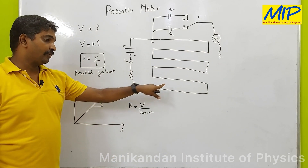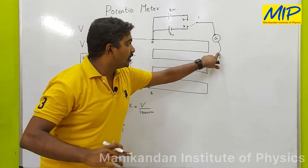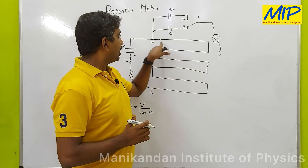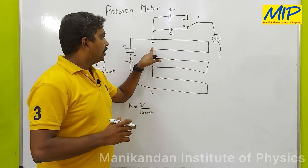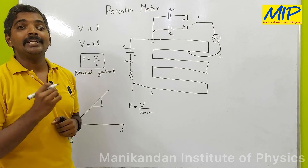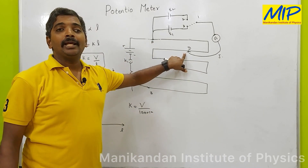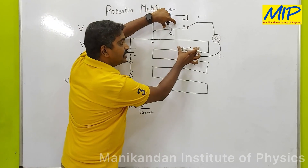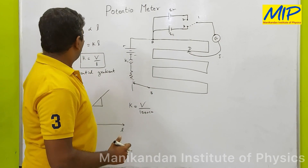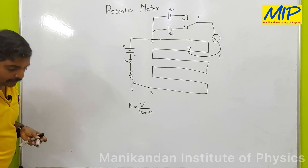We already know the potential drop of this potentiometer is K. If I place the jockey at one particular point I get positive deflection, and at the other end I get negative deflection. So in between A and B there is an equilibrium point. I slide the jockey slowly from A to B, and at a particular point — when the jockey is placed at D — the galvanometer shows null deflection. The length from A to D is the balancing length, and the potential drop across this length is balanced by the EMF of the cell.